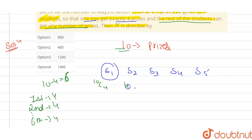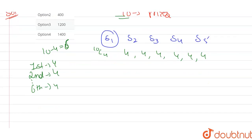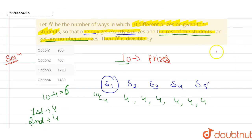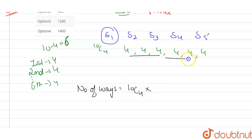So other than the 10C4, I have 4 repeated 6 times — meaning I can distribute these 6 prizes in 4^6 ways. So now, the total number of ways is: number of ways = 10C4 into 4 to the power 6.